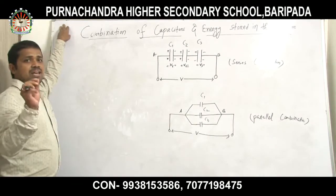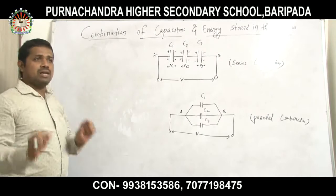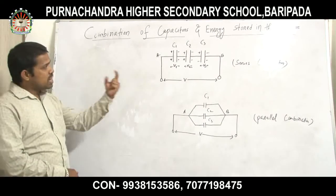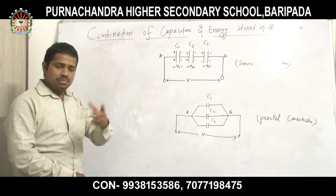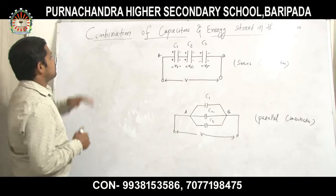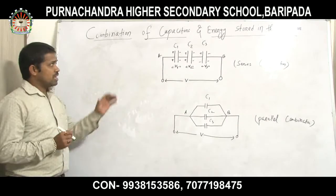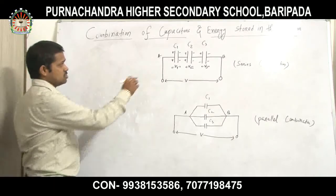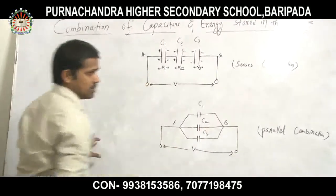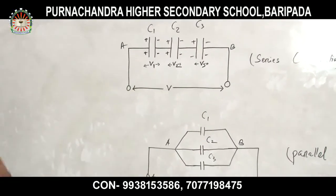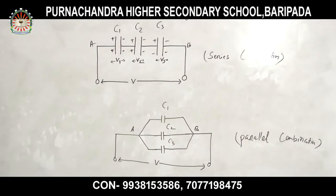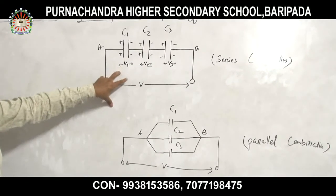A capacitor is an electronic device and it should be connected in an electronic circuit. The question raised is how capacitors can be connected in an electric circuit. There are two types of connections available: one is series combination and the other is parallel combination. These are the two combinations by which we can connect the capacitors in the electric circuit. Let us discuss about the series combination.